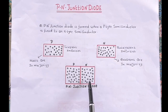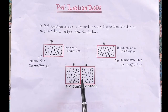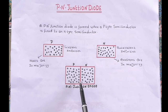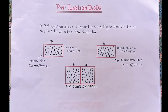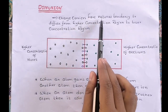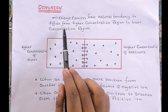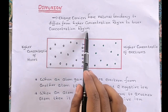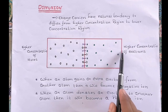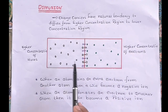N-type semiconductors consist of higher concentration of electrons whereas p-type semiconductors consist of higher concentration of holes. When these semiconductors are joined, the process of diffusion takes place. This phenomenon states that charge carriers have a natural tendency to diffuse from higher concentration region to lower concentration region.